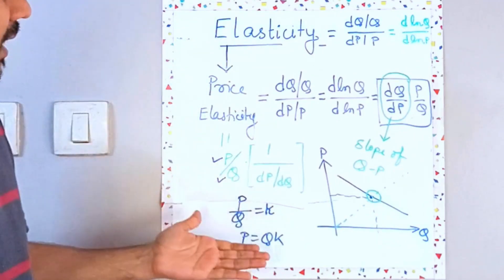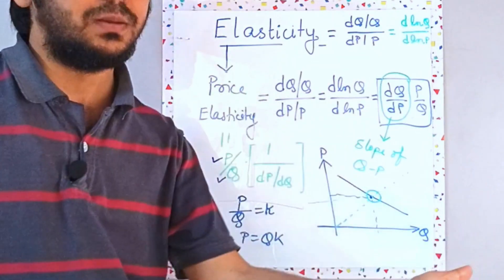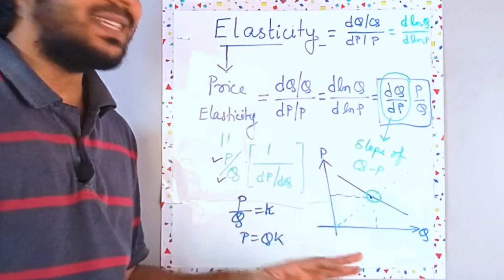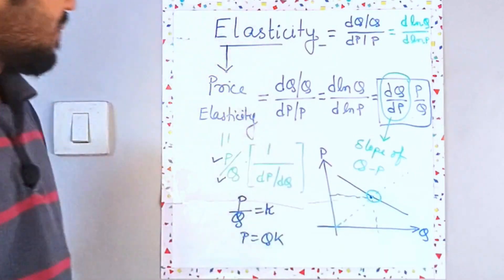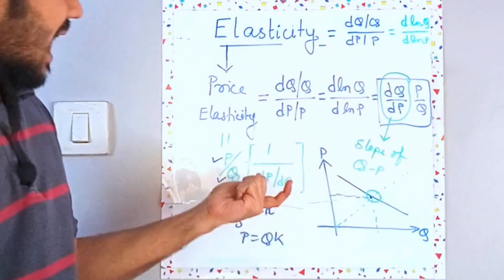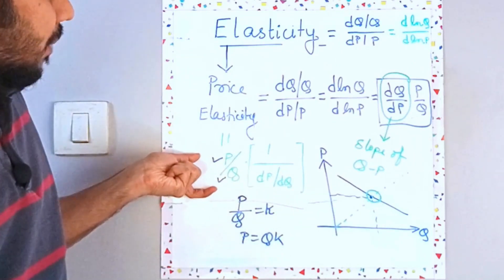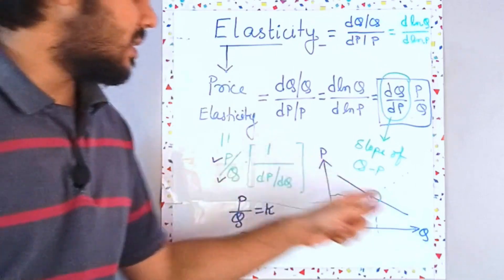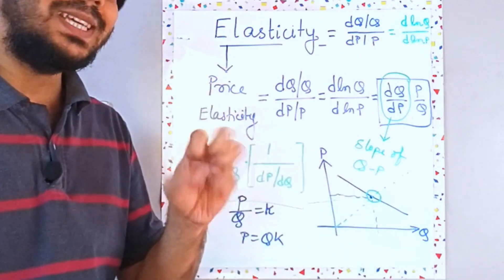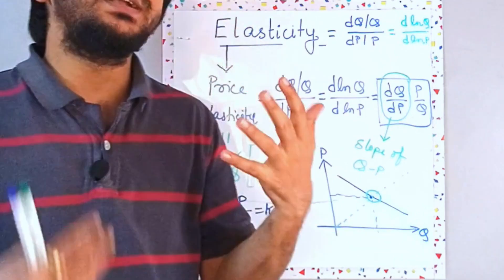Which goes on to say that for a straight line demand, downward sloping demand, the price elasticity is never going to be the same at any two points. Now, the reason is that I have a slope component and I have also a ratio of P by Q, right? But the slope component is same. So the elasticity is just governed by P by Q. So think about it a bit more intuitively now.